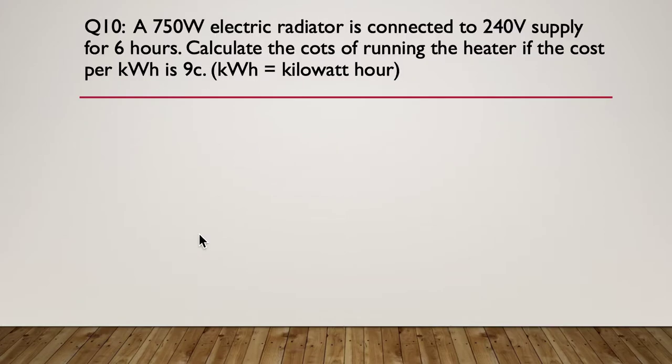Question 10, a 750 watt electric radiator is connected to a 240 volt supply for 6 hours. Calculate the cost of running the heater if the cost per kilowatt hour is 9 cents. Here's the hint. The voltage is irrelevant. The answer lies in the units in kilowatts hours.